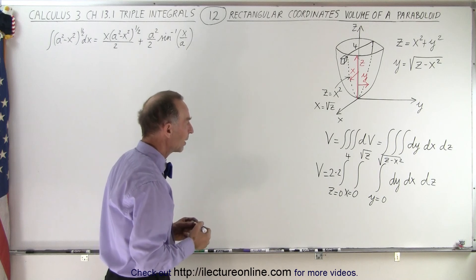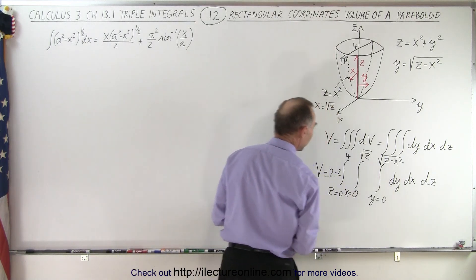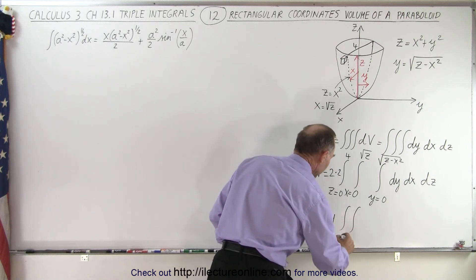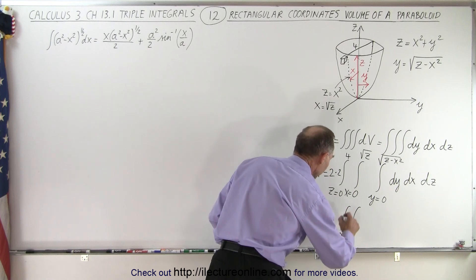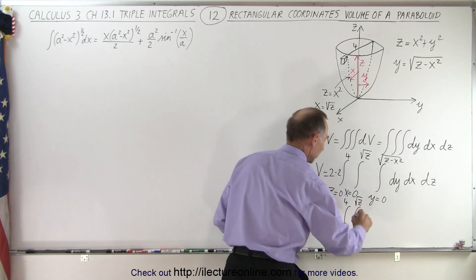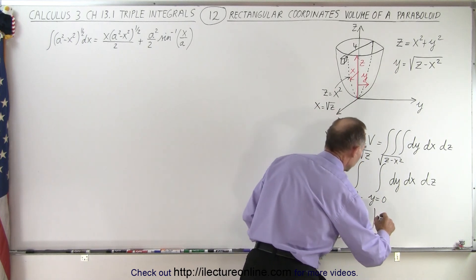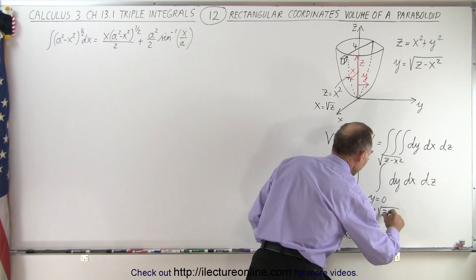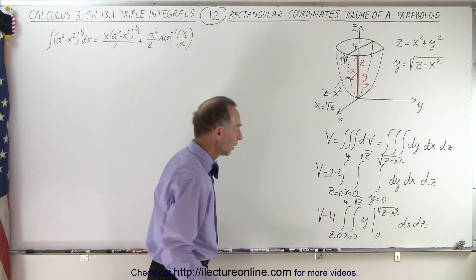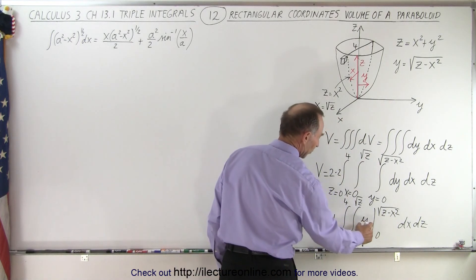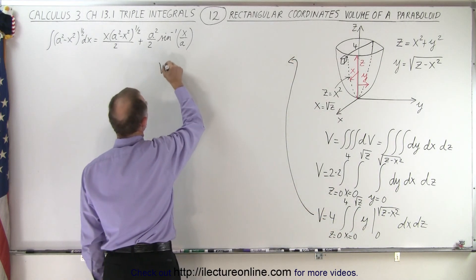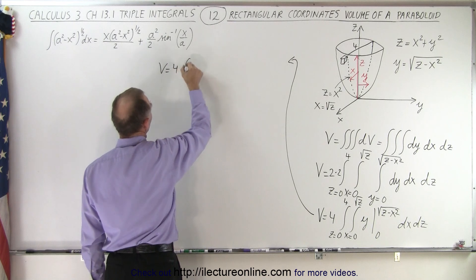So let's go ahead and do that. Let's first integrate over dy, so that means that our volume is equal to 4 times the double integral, we still have z equals 0 to 4 and x equals 0 to the square root of z, and then here we have y evaluated from 0 to the square root of z minus x squared, and we still have our dx and our dz. When we plug in the upper limit we get the square root of z minus x squared, plug in the lower limit to get 0.